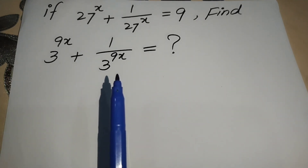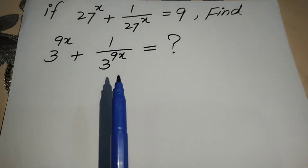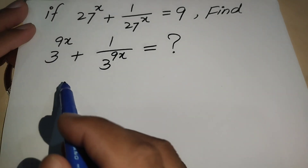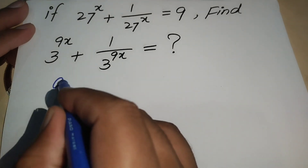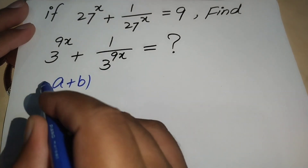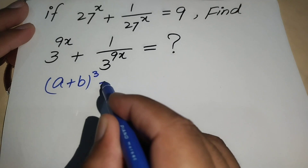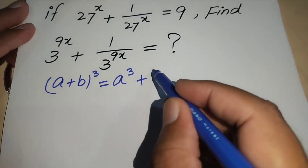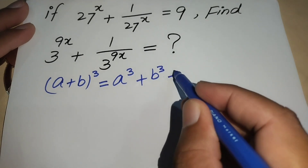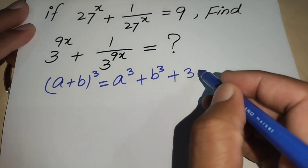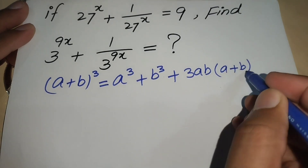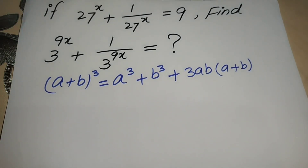To solve this expression, we will use the cubic formula. This is a very famous formula in the form: (a + b)³ = a³ + b³ + 3ab(a + b).